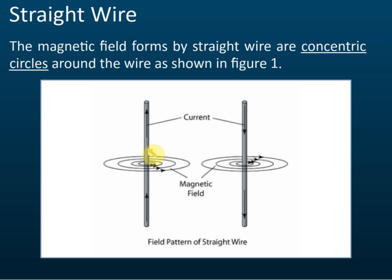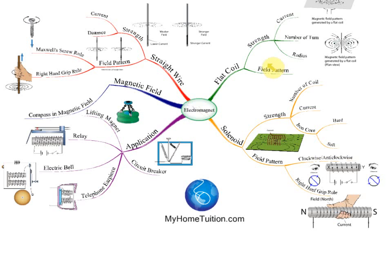The pattern of the magnetic field is the same for both wires, but the direction differs. If the current goes up, the field is anti-clockwise. If the current goes down, the field is clockwise. We will explain how to determine the directions of the field shortly.